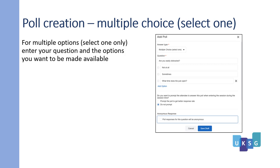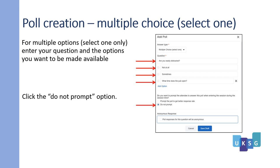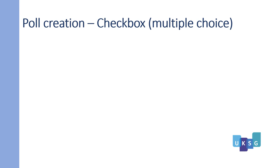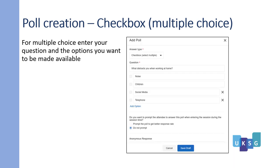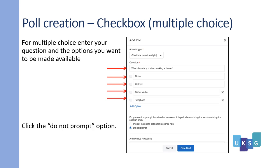For multiple choice where they can only select one item, enter your question and the options you want to be made available. Click the Do Not Prompt option and responses will be anonymous.